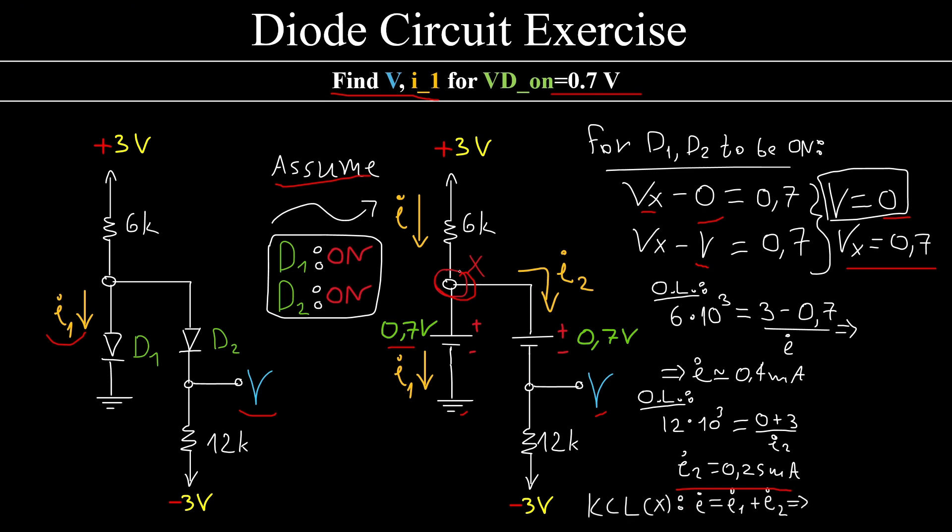If I do a KCL here, the total current is I1 plus I2, which means that I1 is 0.15mA. Does my result make sense? Well, yes. The voltage here is higher than this voltage by 0.7V. This holds also true for this and this. This current flows from here all the way to here, so we don't violate any diode rules. So it seems that my assumption was correct.